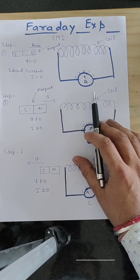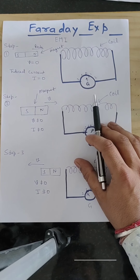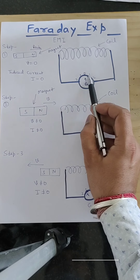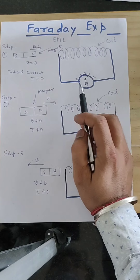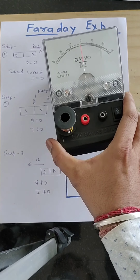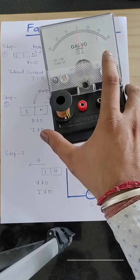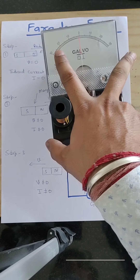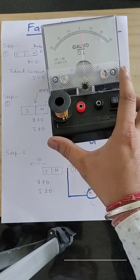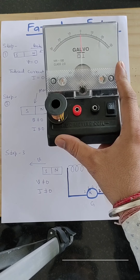Today we will concentrate on this. This is a very interesting and important topic. We will concentrate on the deflection shown in the galvanometer. A galvanometer is a device which is used to measure the amount of current — the pointer will be deflected. If it deflects towards the right or towards the left, it shows the direction of the current. So a galvanometer is a device used to detect the small amount of current in a circuit as well as the direction of the current.